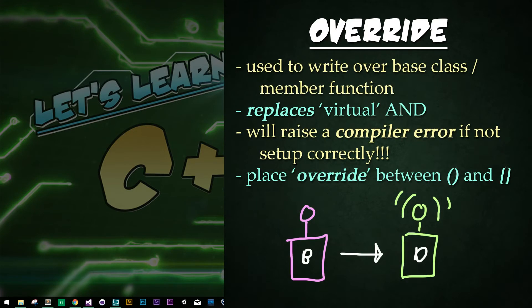In the last tutorial, we saw how the keyword virtual would be used to create inheriting functions that would override base class functions. But it wasn't entirely clear that we were overriding it properly unless the base class function was purely virtual. This is where the keyword override comes in. Override is used to write over or override a virtual base class function or method and acts as a safeguard to prevent accidentally creating a new function.